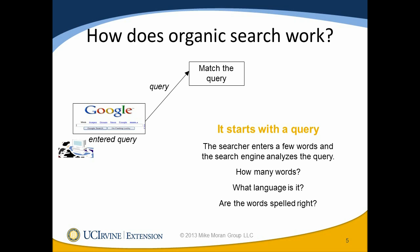Let's look at how organic search works. It starts with a query — another name for the keywords or key phrases someone types into the search box. When a searcher enters those words, the search engine analyzes the query. In Western languages, it needs to figure out what language it's in, how many words it is, and whether the words are spelled correctly.